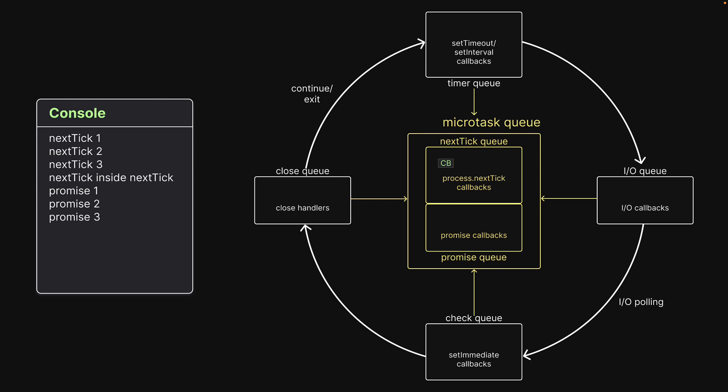We then see promise.resolve 3, and at this point the promise queue is empty. Node will once again check if there are new callbacks in the microtask queues. Since there is one in the nextTick queue, it will execute that, which explains our last log statement. A slightly advanced experiment, but the inference remains the same: all callbacks in the nextTick queue are executed before all callbacks in the promise queue.